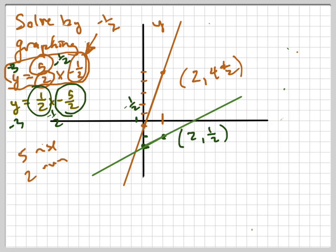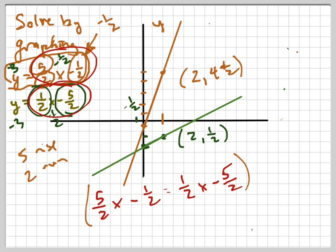So I'm going to use substitution, and that means I'm going to plug, I'm going to set them equal to each other. That's what y equals, and that's also what y equals. So I'm going to set them equal to each other, 5 halves x minus 1 half equals 1 half x minus 5 halves. I'm going to show you a cool little trick here. It's called clearing the fraction. If I multiplied everything by 2, because that's what the least common denominator is, I would cancel out, and I would just get 5x minus 1 equals 1x minus 5.